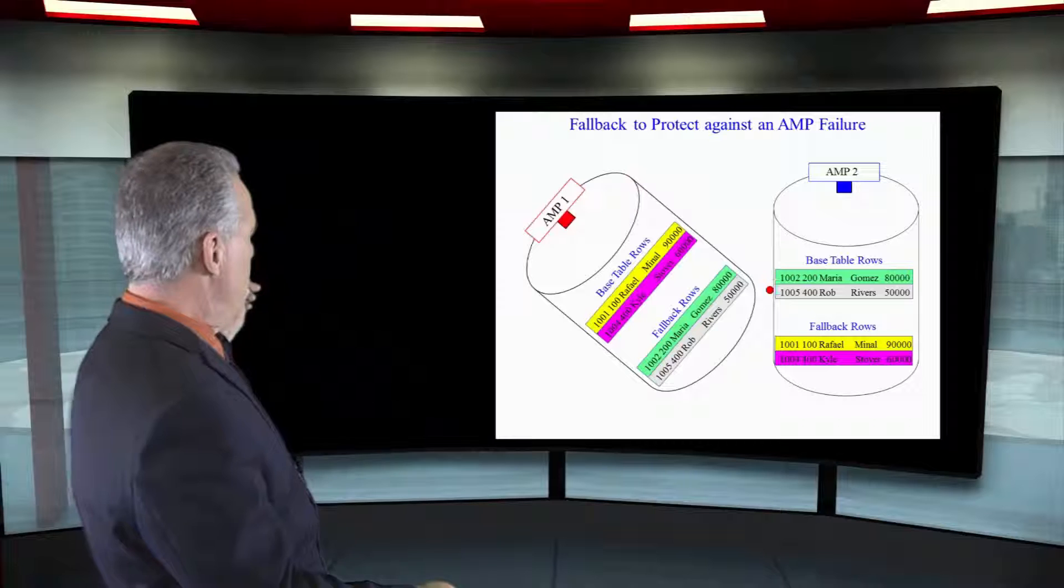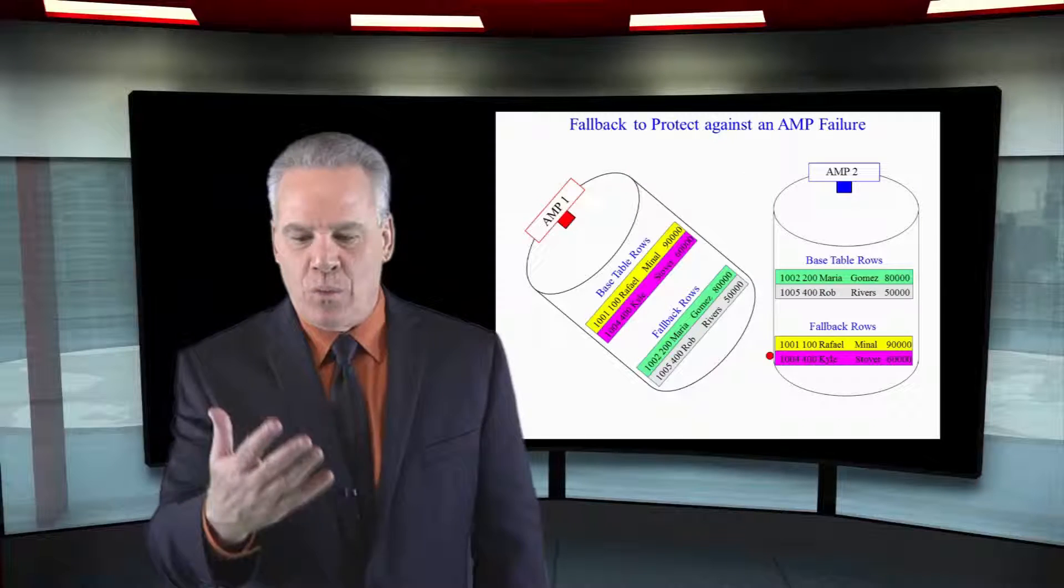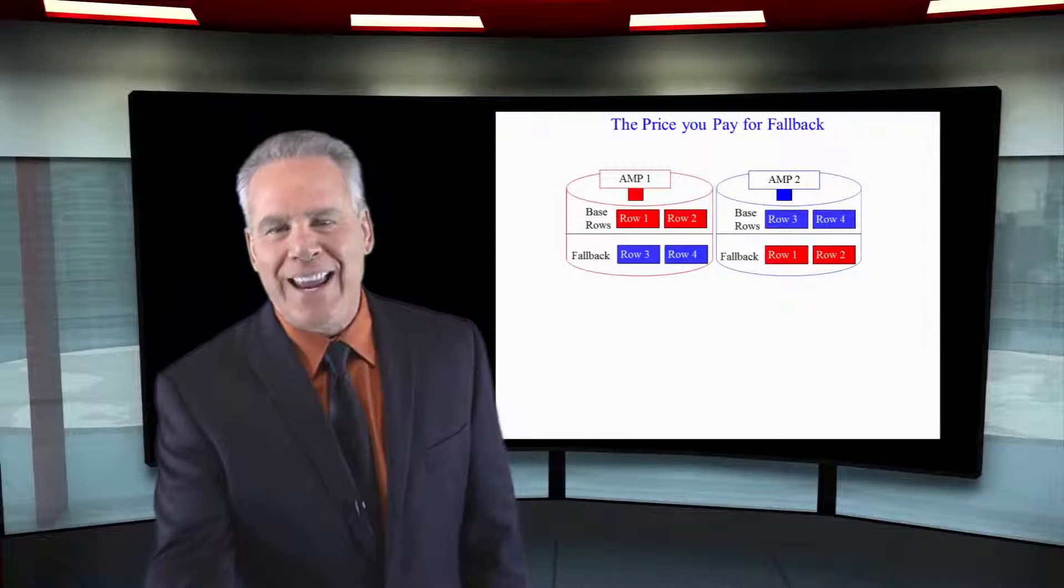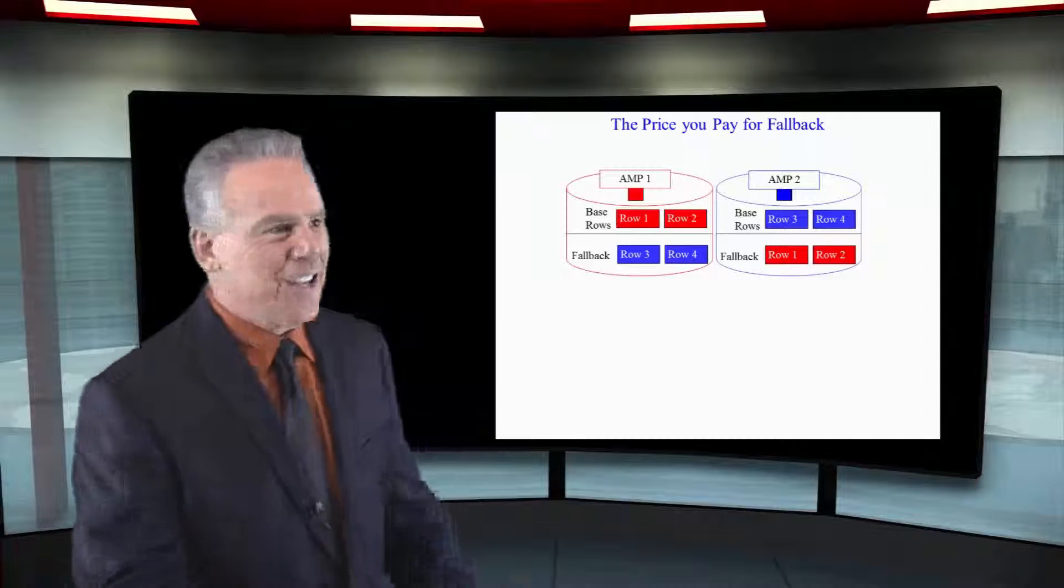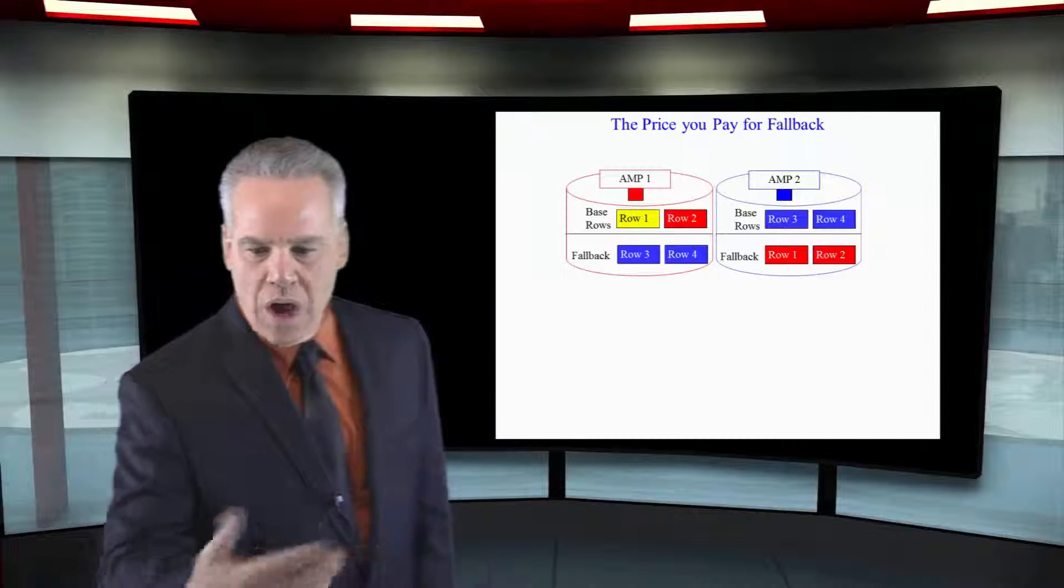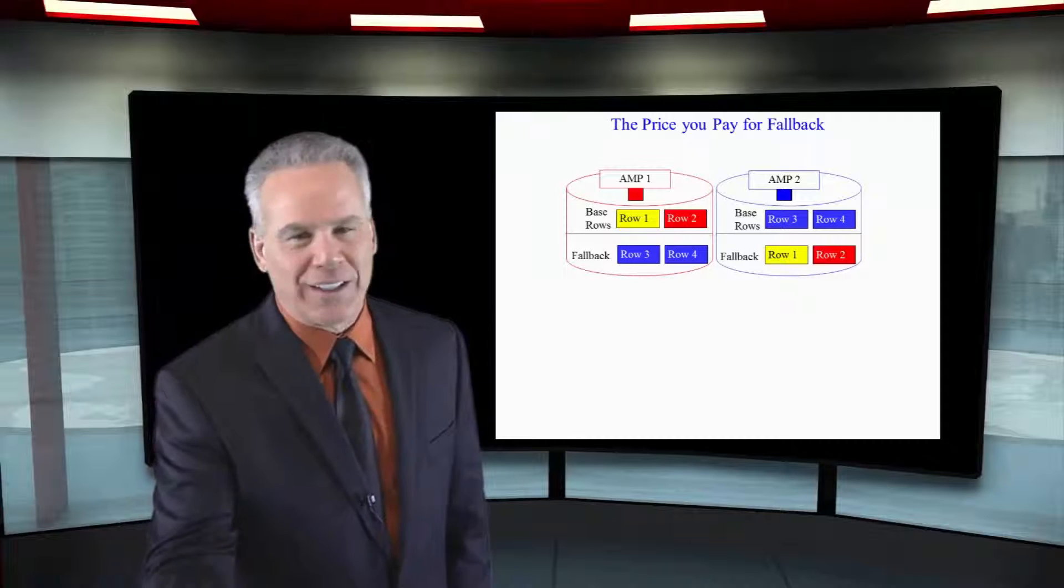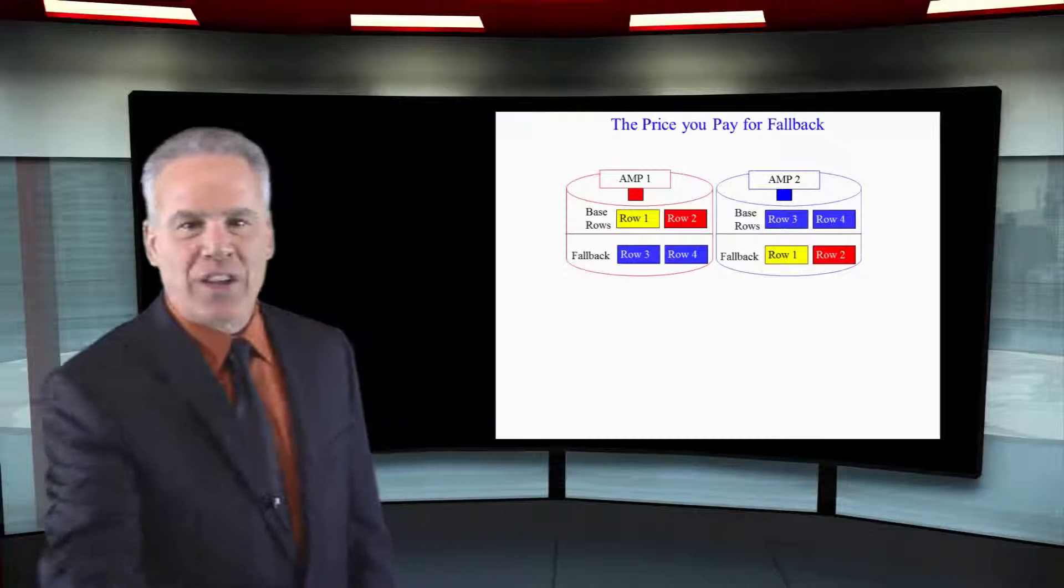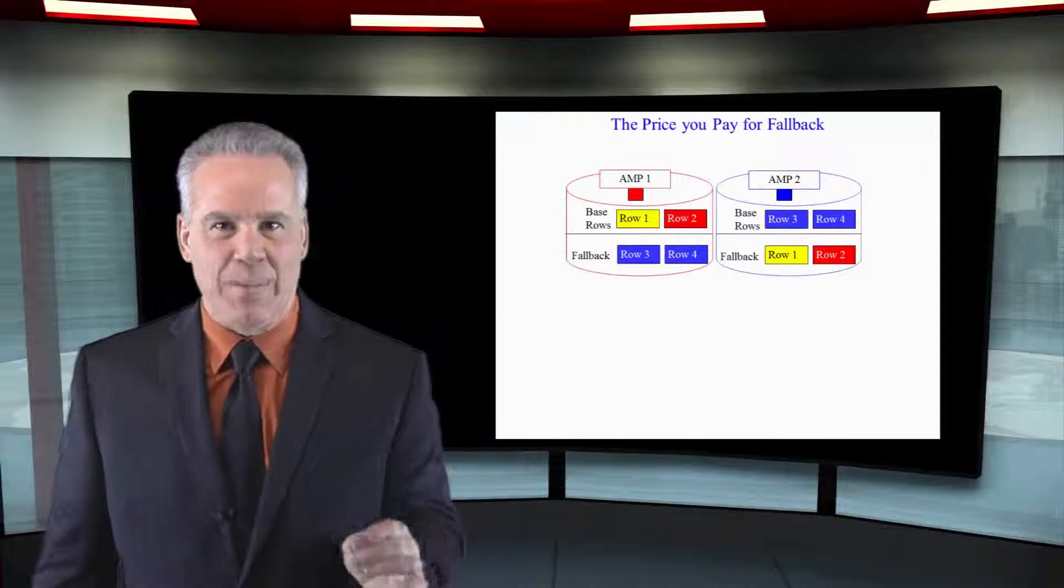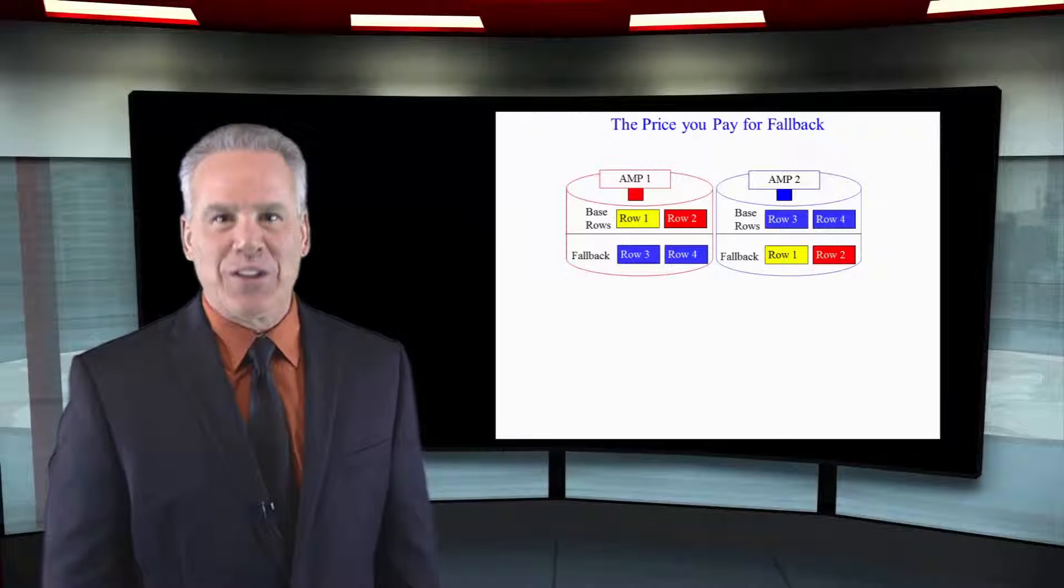Think about it. We've just written a row to AMP one. We've got to write that row to AMP two in the fallback area. So each time we write a row, update a row, insert a row, delete a row, we have to do the same on the other AMP. The price you pay, double the space.